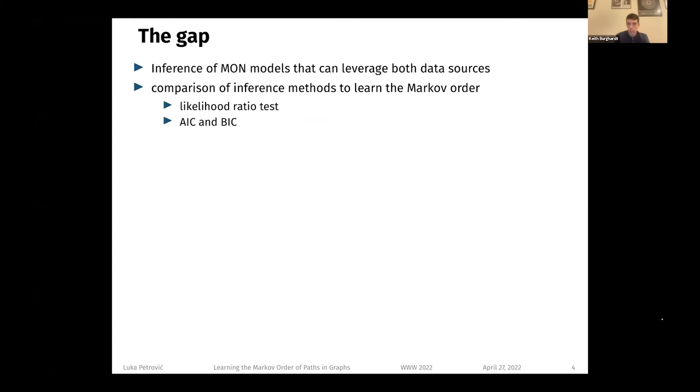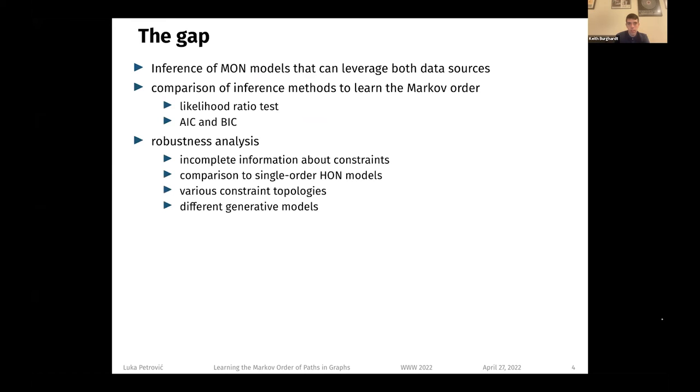And once we have such an inference model, we have to compare how sensitive it is to detect the Markov order, which is the issue of model selection. We should compare it to the likelihood ratio test, which has been used to select the order of the multi-order network models, and to AIC and BIC, which are often used for Markov chains and which can be adapted to multi-order network models as well. Finally, the results should also be tested for robustness, but due to time constraints, I will not discuss this part of our work in the talk.